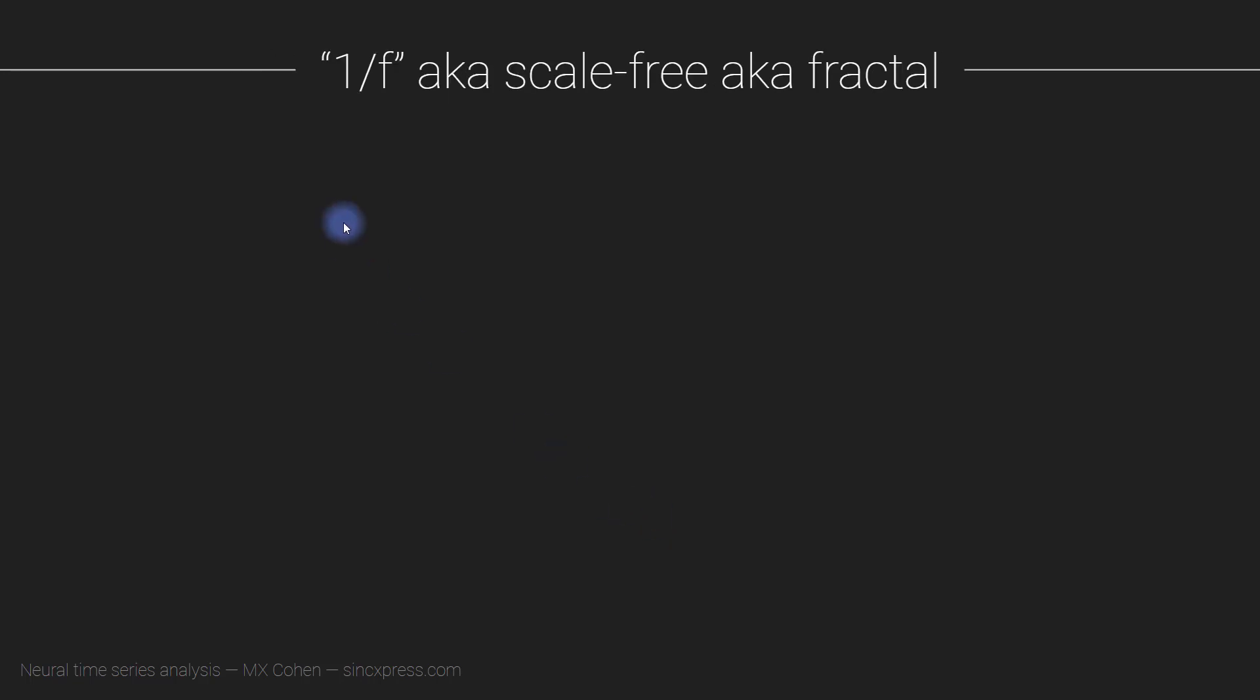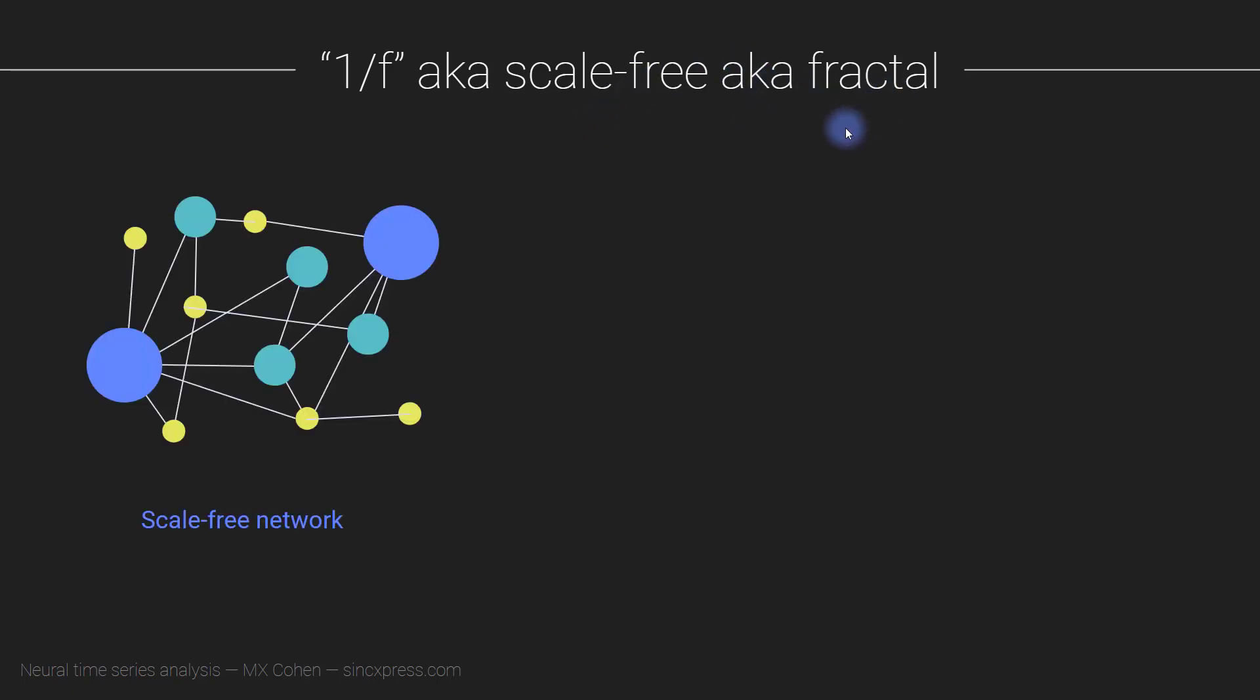So now let me talk a little bit about 1 over f, which is also sometimes called scale-free activity or scale-free organization. And it's also sometimes called fractal dynamics or fractal organization. So imagine we have a network that looks like this. Each of these circles corresponds to nodes. And these are the connections between the nodes.